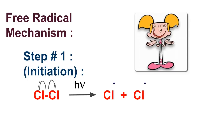Step number one is initiation — that is the starting point. In this step, light energy is supplied and the chlorine molecule is homolytically cleaved. This bond breaks in such a way that each fragment gets one electron — one electron jumps on each atom — forming two chlorine free radicals. Free radicals are very highly reactive species, so due to these free radicals, the alkanes react.